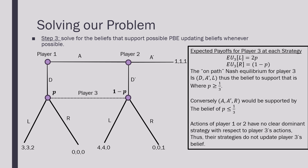We're going to compute the expected payoff of player three at each strategy, first assigning beliefs at each information set. The expected payoff of player three playing L — meaning pooling on L — would be 2P, and for player three playing R they would get a payoff of 1 minus P. The on-the-path equilibrium for player three is going to be where they're playing D, A prime, and L.